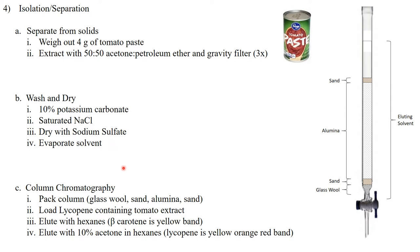So part of this experiment is actually to make a column for doing column chromatography. We're going to pack that column with glass wool, sand, alumina, and sand, as shown over here on the right-hand side.